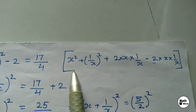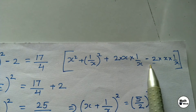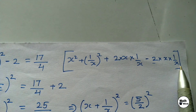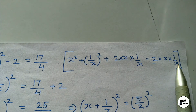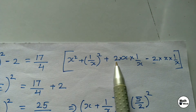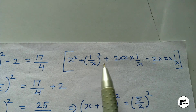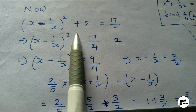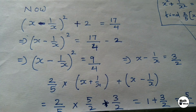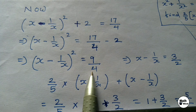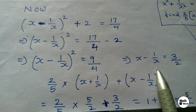Now we need to find x−1/x. On the left-hand side we have x²+1/x². We need to subtract 2×x×(1/x) to form (x−1/x)². That means (x−1/x)²+2 = 17/4. Moving 2 to the right-hand side and solving gives 9/4. Both sides are perfect squares, so taking the square root: x−1/x = 3/2.